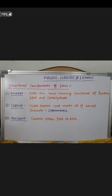Next are the structural components of a virus — this is important. In structural components there are 3 things: envelope, capsid, and nucleoid. The envelope is the outer thin loose covering composed of proteins, lipids and carbohydrates. The capsid is the outer protein coat made up of small subunits called capsomeres. The nucleoid contains the DNA or RNA.